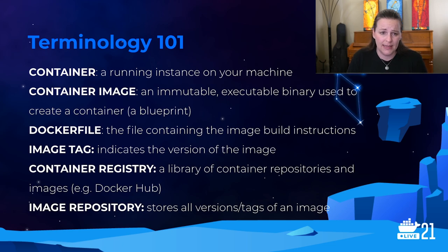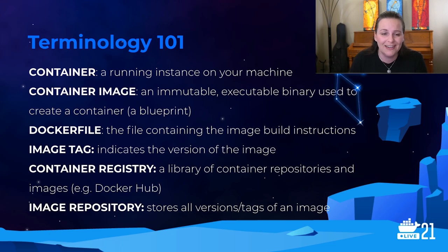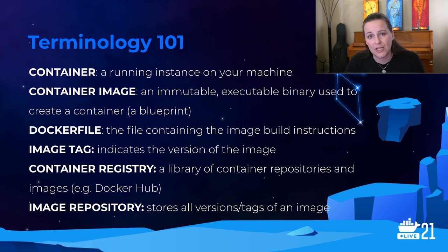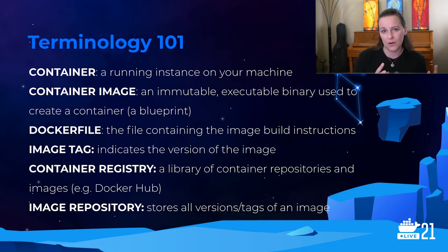An image tag indicates the version of the image that you're working with. A container registry is a library of container repositories and images — an example of a public registry is Docker Hub. They also provide private registries, and there are lots of other companies that provide private registries as well, including JFrog and the cloud providers. An image repository stores all of the version tags of an image. So you have a container registry, it contains repositories, repositories contain images, and every version of that image is indicated with tags.